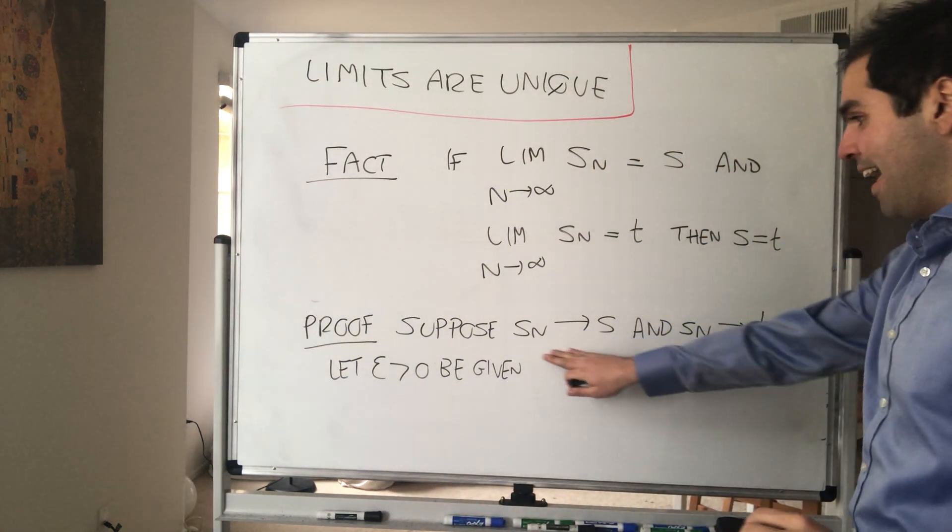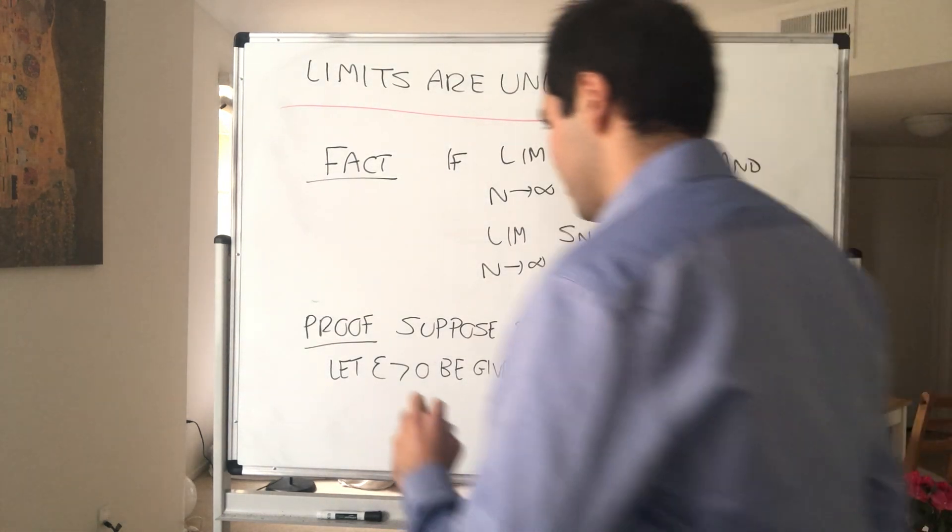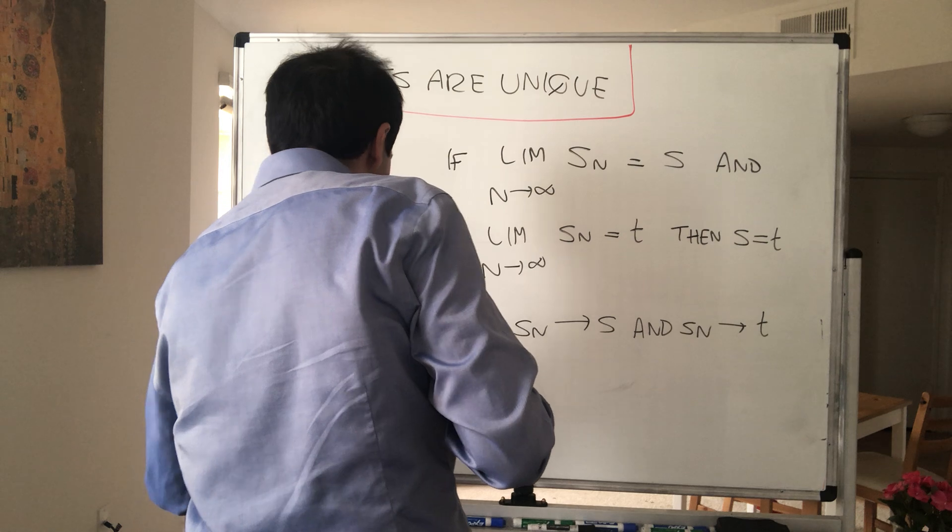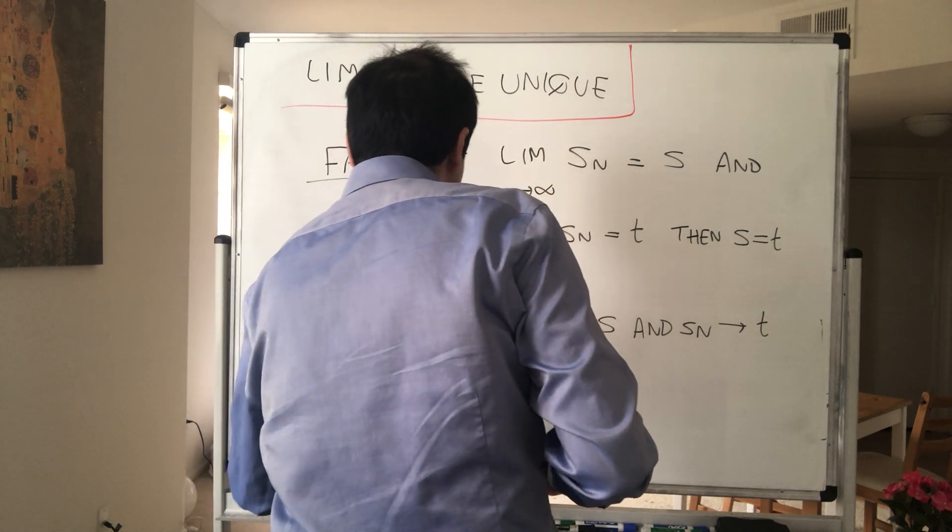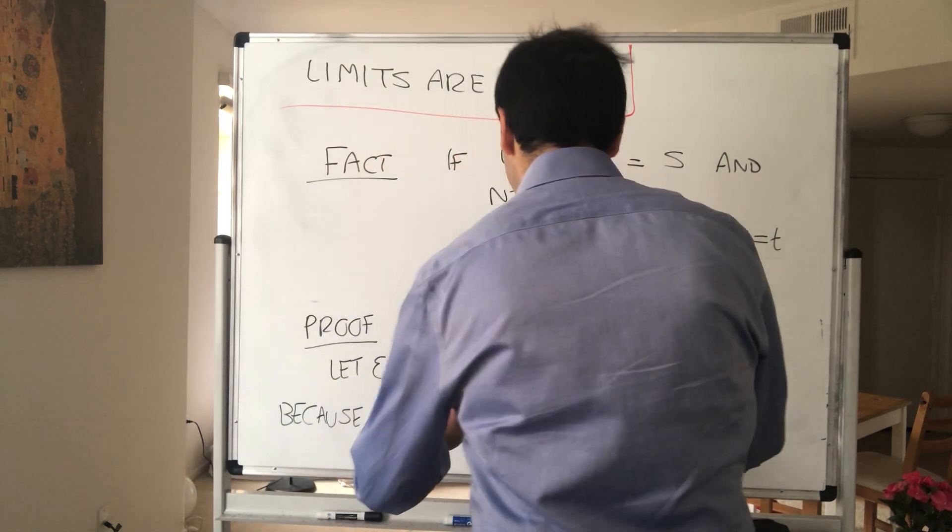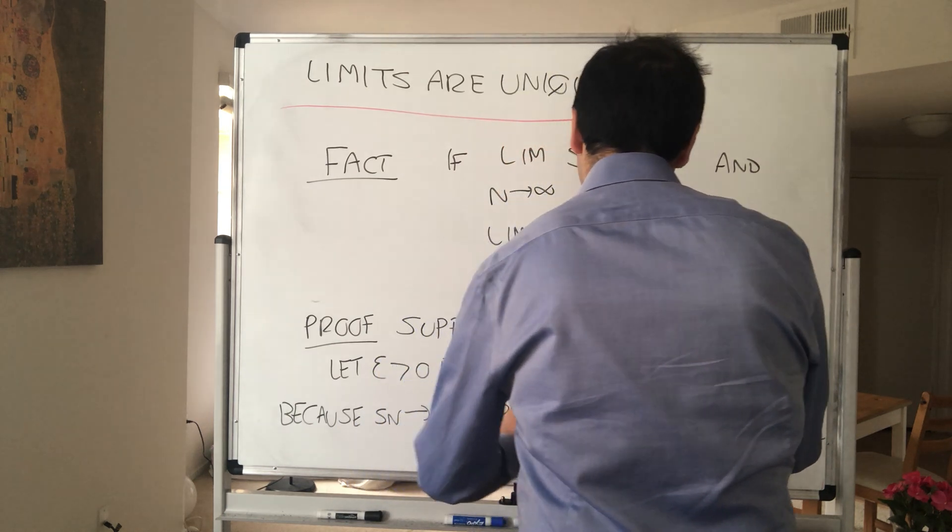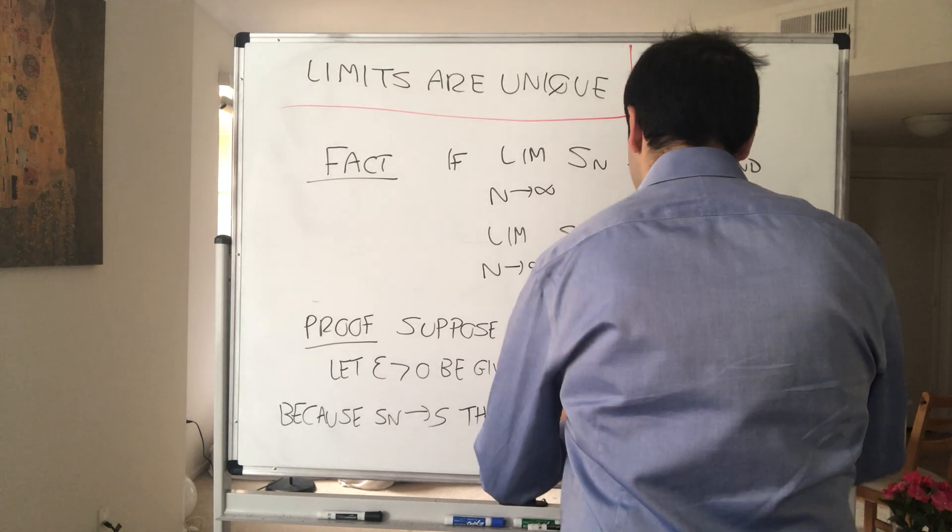Now, on the one hand, we know Sn goes to S. So because Sn goes to S, we know that there is some number N1 such that